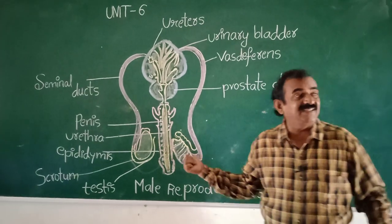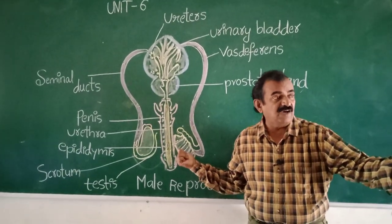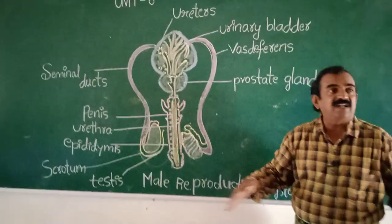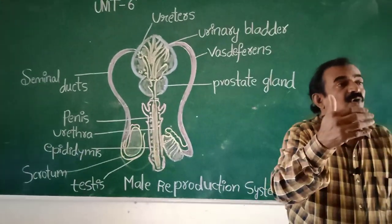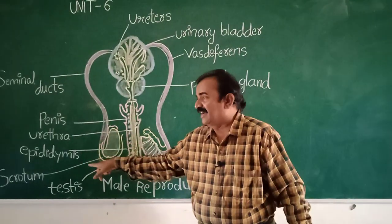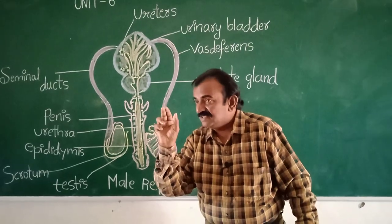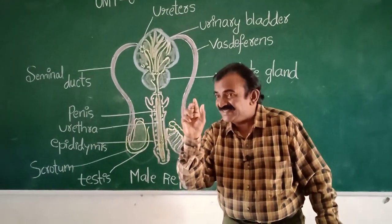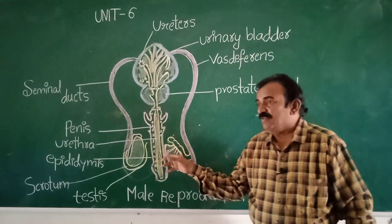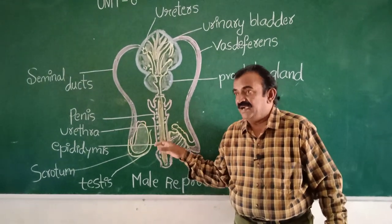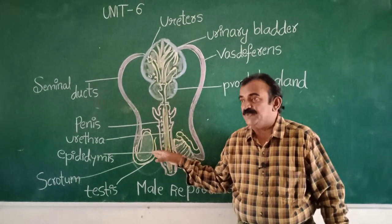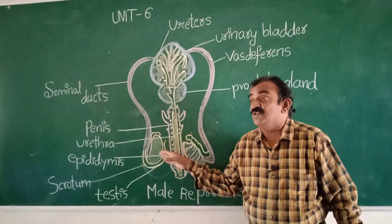Name the hormone produced by the testes — testosterone hormone. Two testes are present outside the body in the scrotum. They contain seminiferous tubules and germinal epithelial cells that release sperms. Sperms are then produced and they enter into the vasa efferentia.